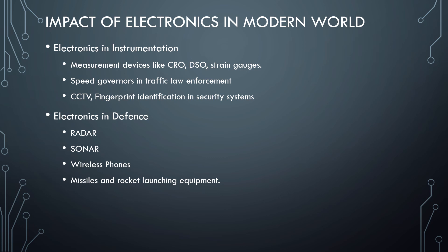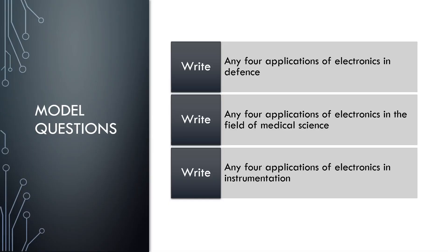From a KTU exam perspective, questions in this topic include listing applications of electronics in fields like defense, medicine, or instrumentation. Previous year questions include: 'Write any four applications of electronics in defense' — answers include radar, sonar, wireless phones, and rocket launching. 'Write any four applications in medical science' — answers include X-rays, MRI scanning, healthcare monitoring, and glucose measurement. 'Write any four applications in instrumentation' — answers include CRO, DSO, strain gauges, CCTV, and fingerprint identification.